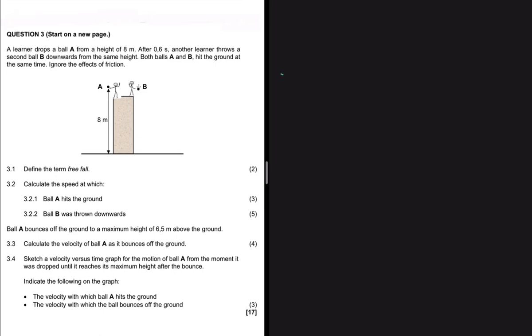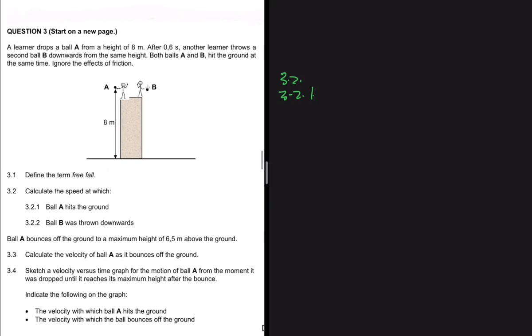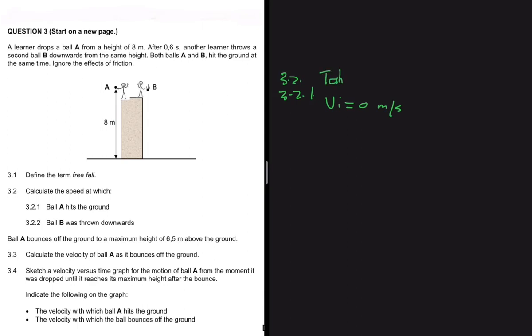Let's jump straight to 3.2.1. In this problem, Elena drops a ball from a height of 8 meters. We know that the initial velocity vi is equal to zero meters per second because the ball is being dropped. Let's take up as positive, so the ball is dropped from a height of 8 meters and we want the velocity at which it strikes the ground.